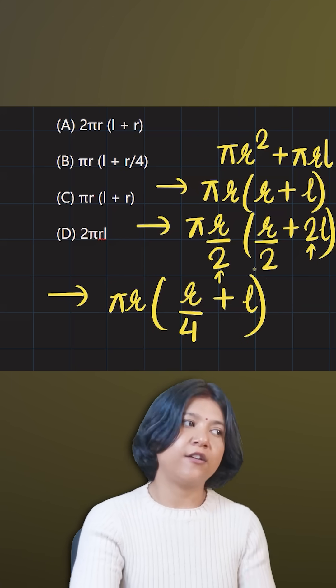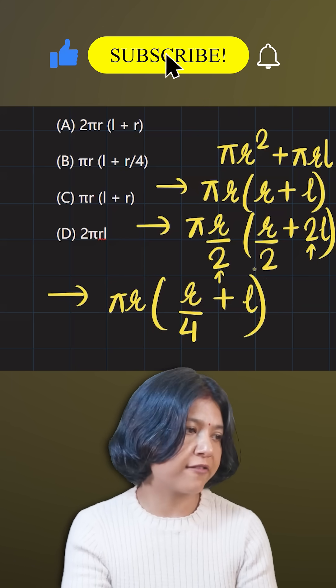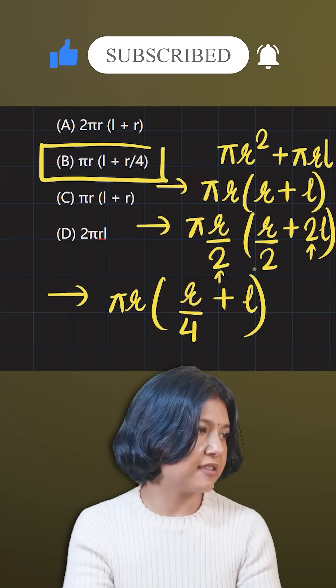Hence, I think we have landed on getting the answer here: pi r, whole r by 4 plus l. This is option B, that is it.